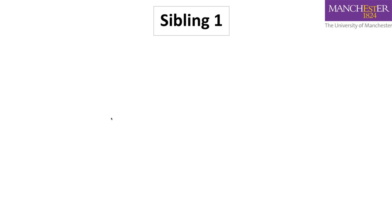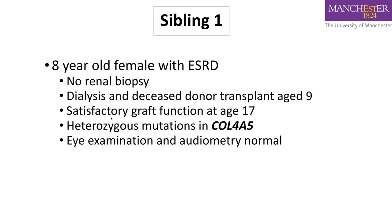This boy had an older sibling — an eight-year-old female — who had presented earlier. She relocated to the UK from Pakistan and was close to end-stage renal disease at presentation. We did not perform a diagnostic renal biopsy, and instead prepared her for dialysis and ultimately a deceased donor transplant a year later. She has satisfactory graft function at age 17. Retrospective genetic analysis confirmed she also had a heterozygous mutation in COL4A5.